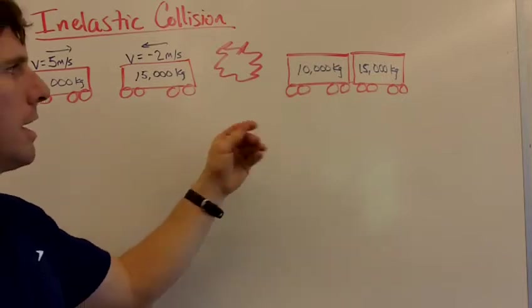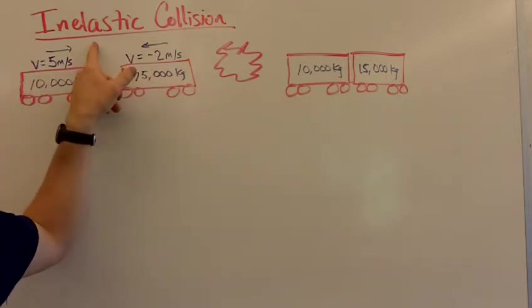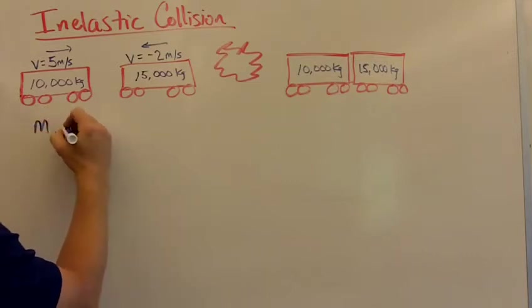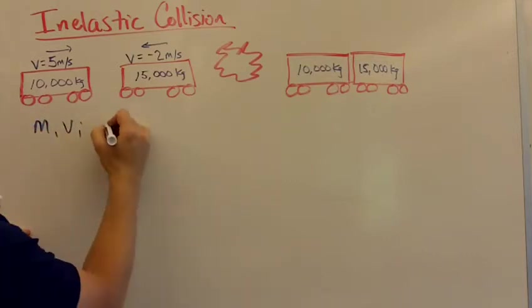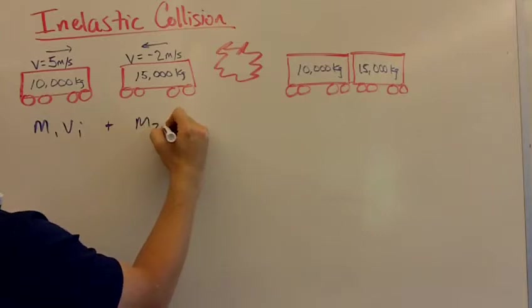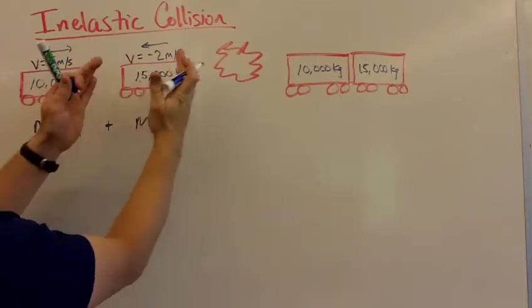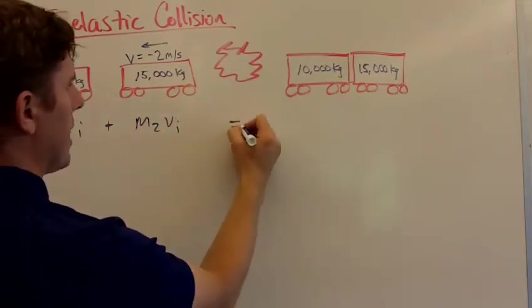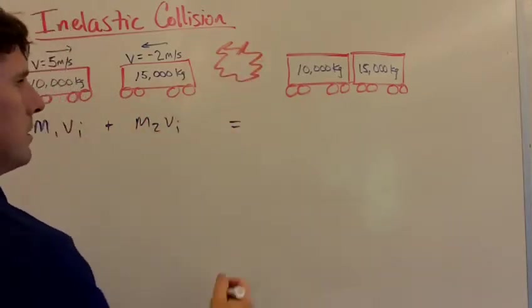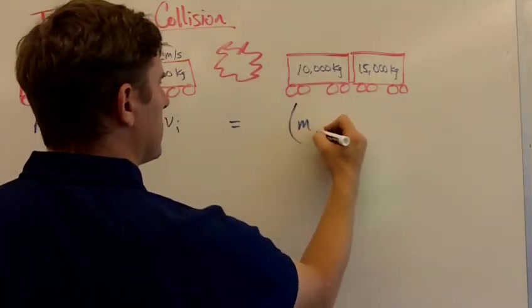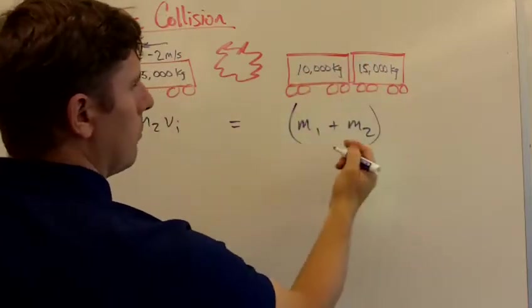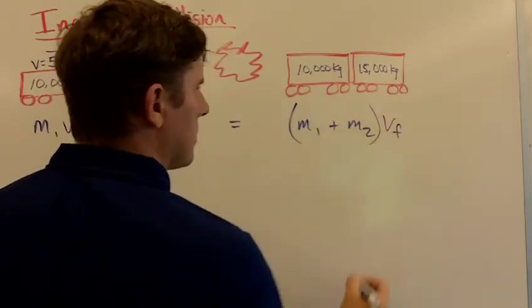They're going to collide and link together. That's what makes it an inelastic collision—the fact that they're linked by the end of it. So what's our equation for this? It's m1 times velocity initial plus m2 times velocity initial. This is m1 and this is m2. Then we have the collision, and then we make a parenthesis and say m1 plus m2. We're adding their masses together because they become one object times some final velocity.